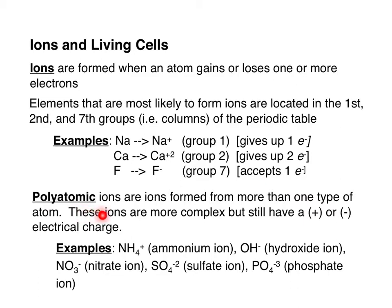Don't forget we also have polyatomic ions. Polyatomic ions are not really molecules — they're compounds that are more complex than single element ions, but together these atoms will form a compound that has an electric charge. Polyatomics like ammonium, hydroxide, or phosphate are all compounds of different elements that collectively will have an electric charge.